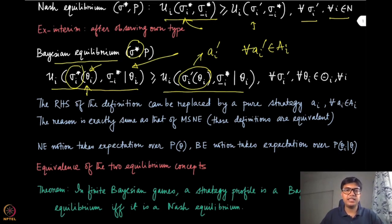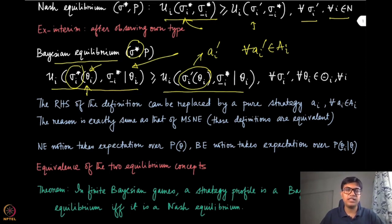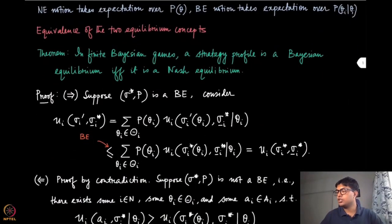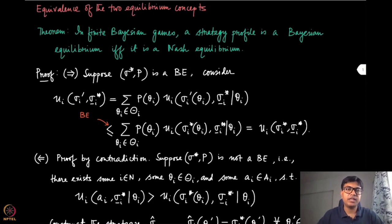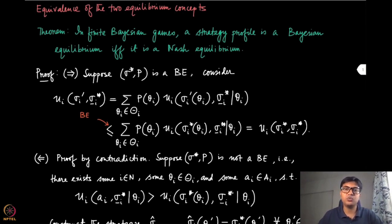The strategies are just a mapping from capital Theta_i to probability distributions over A_i. These two equilibrium concepts, though defined at different levels of information, are actually equivalent in finite Bayesian games. The theorem states formally: in finite Bayesian games, a strategy profile is a Bayesian equilibrium if and only if it is a Nash equilibrium. This demystifies the distinction — we can use either concept without loss of generality in the incomplete information setup.